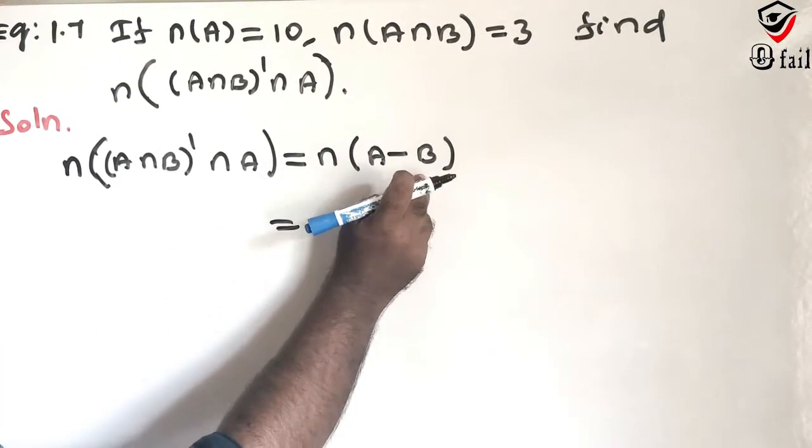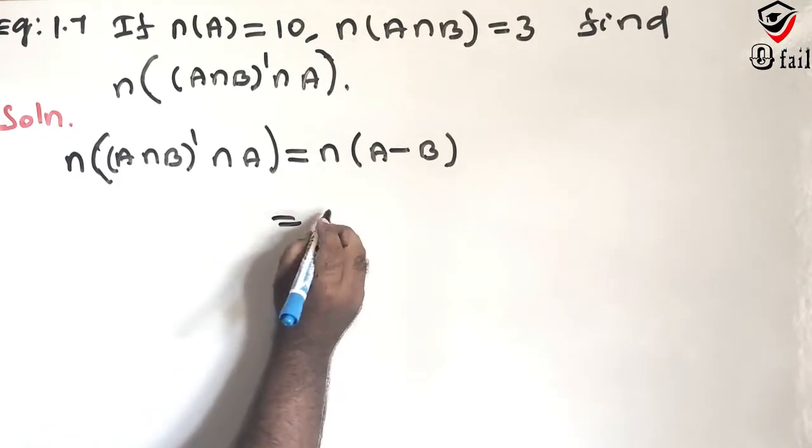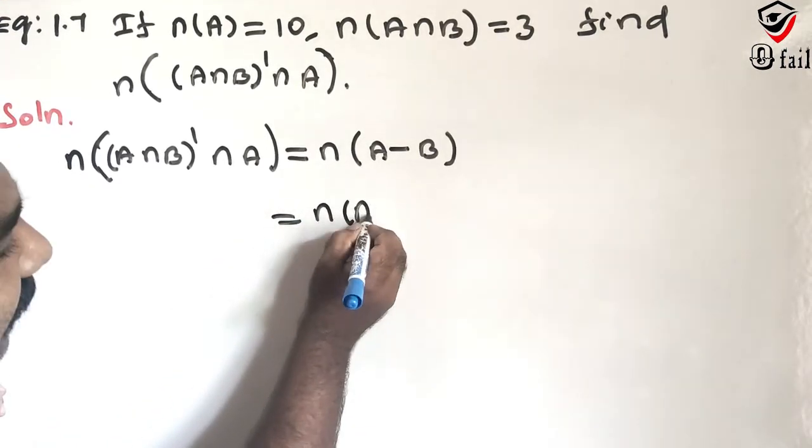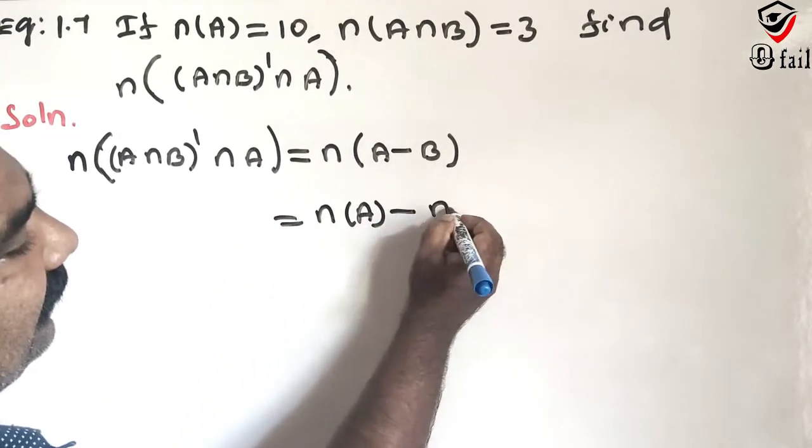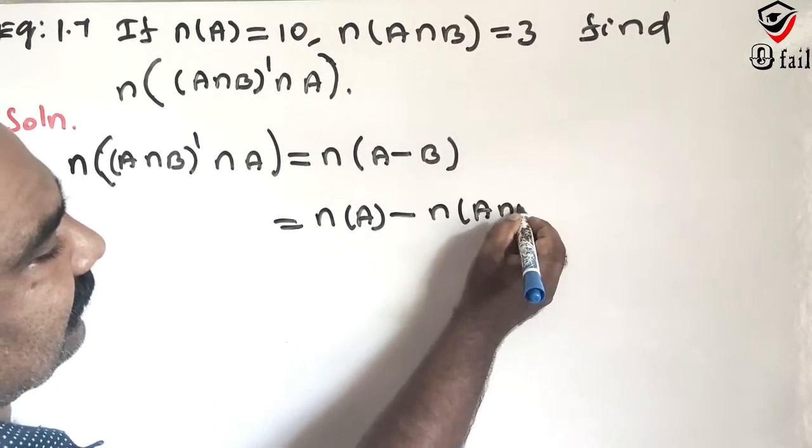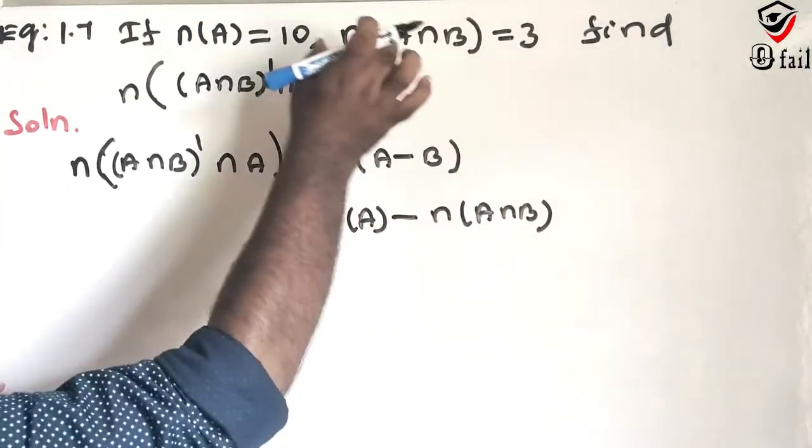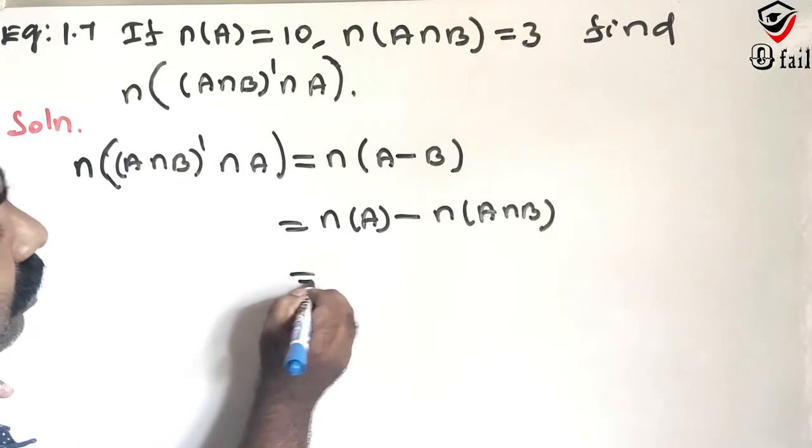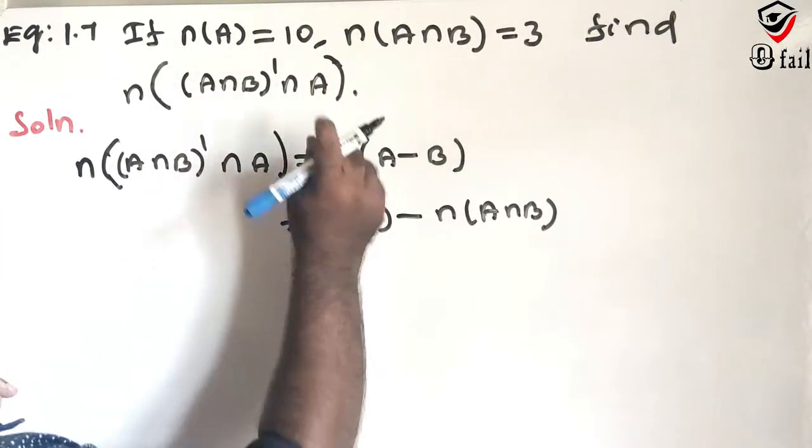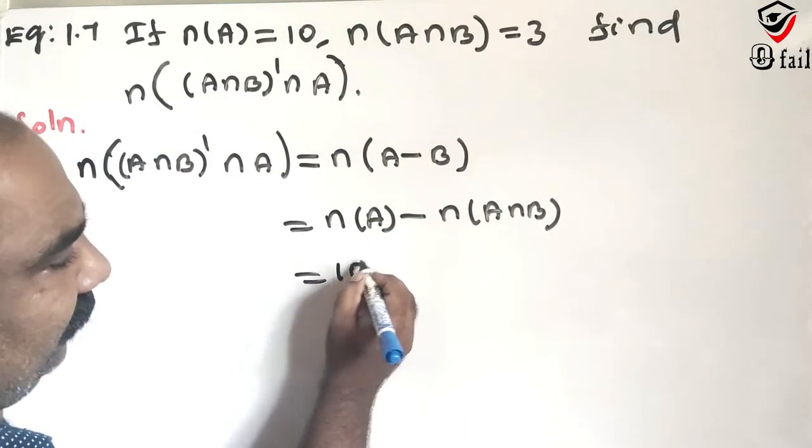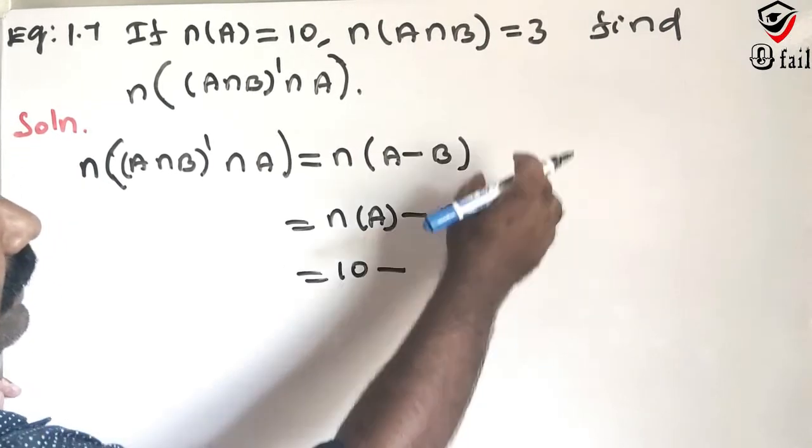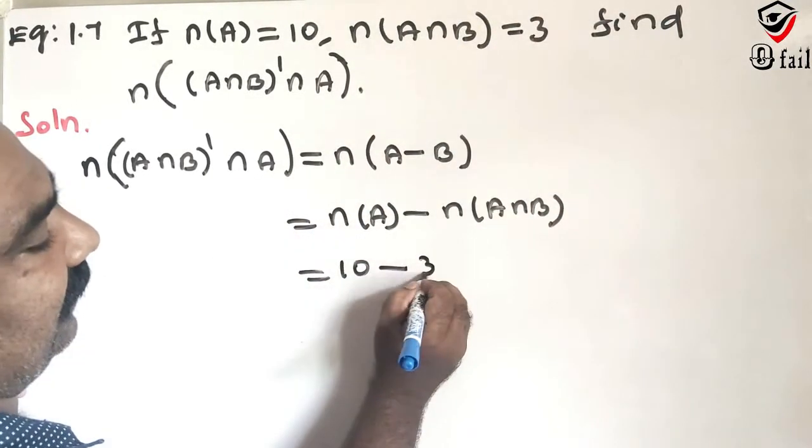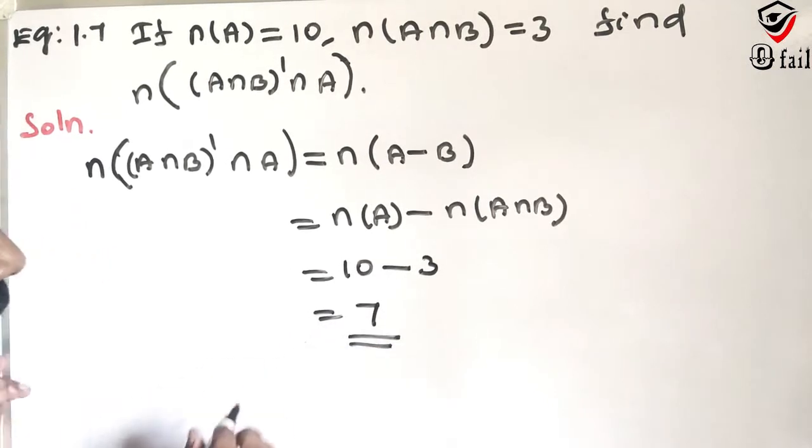n of A difference B is equal to n of A minus n of A intersection B, so the answer is 10 minus 3 equals 7. This is the answer.